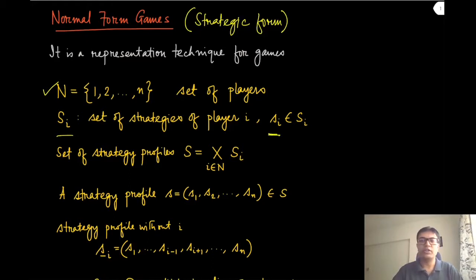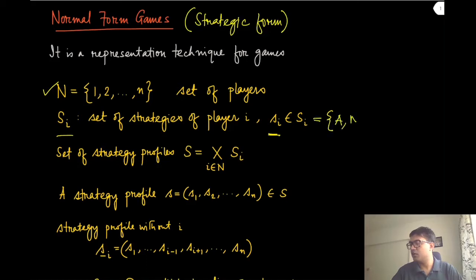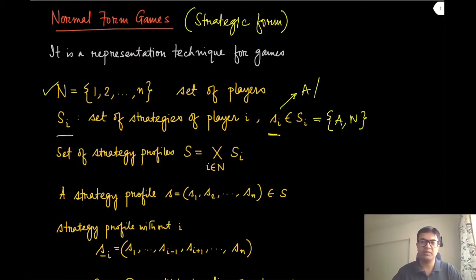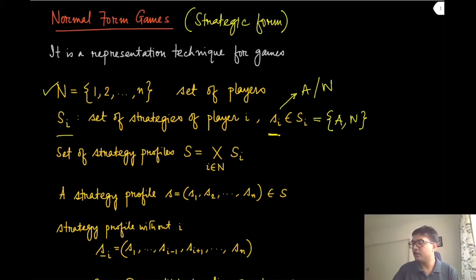Going back to our example of the neighboring kingdoms dilemma, the set S_i was either agriculture or war for both players, and s_i was whichever specific strategy that player was picking — either A or W. Now the Cartesian product of all the strategy sets of all the players is what we call the set of strategy profiles.